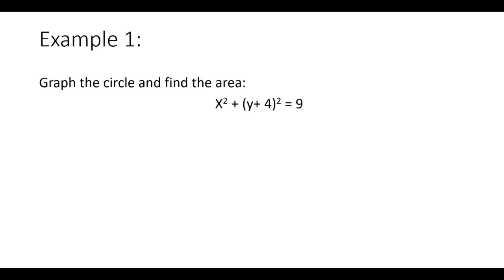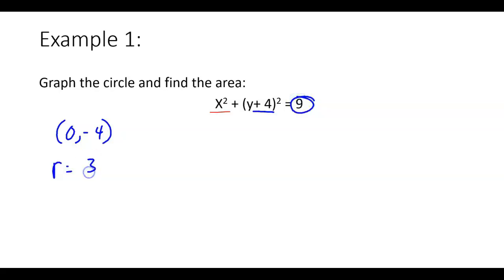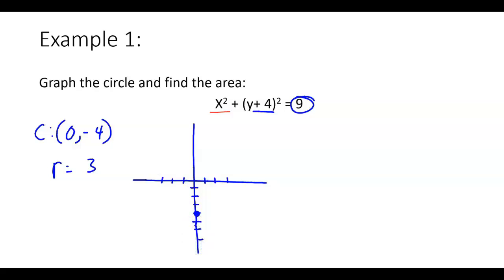Let's look at an example. We want to graph this and find its area. Notice that this one is missing the H number — that means it's zero. So we have center at zero and K is negative four. Remember to do opposite signs. The radius will be the square root of this number, which is three. So I've got my center at (0, -4) and my radius is three. We're going to go up three, right three, left three, down three, and connect our dots.